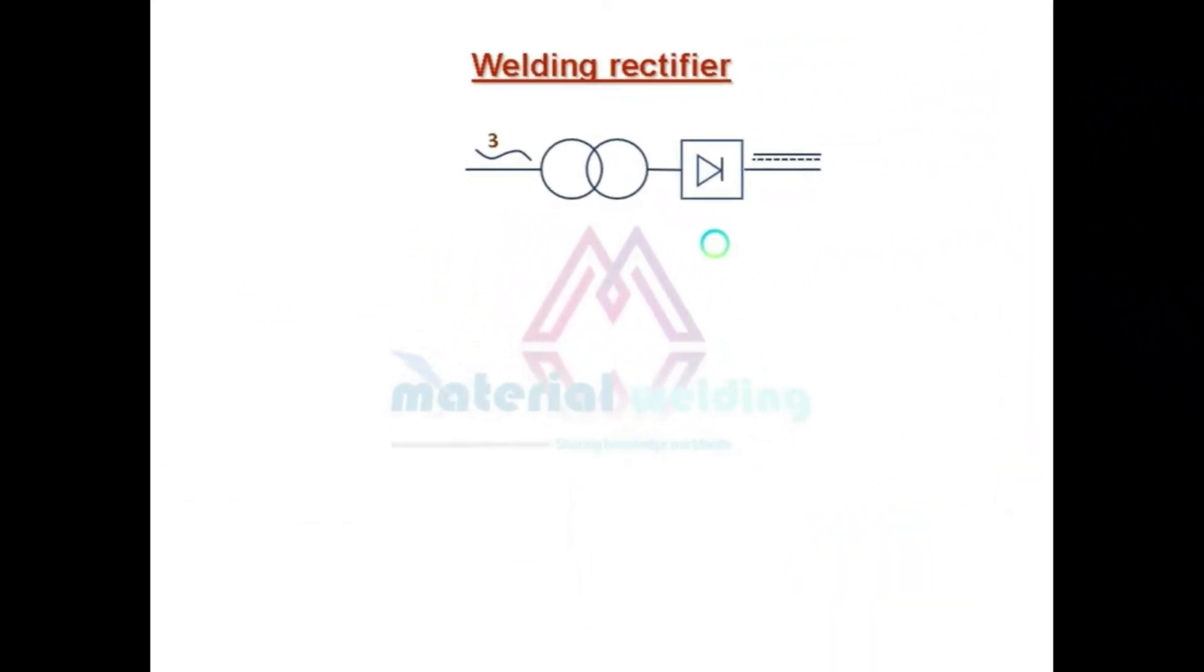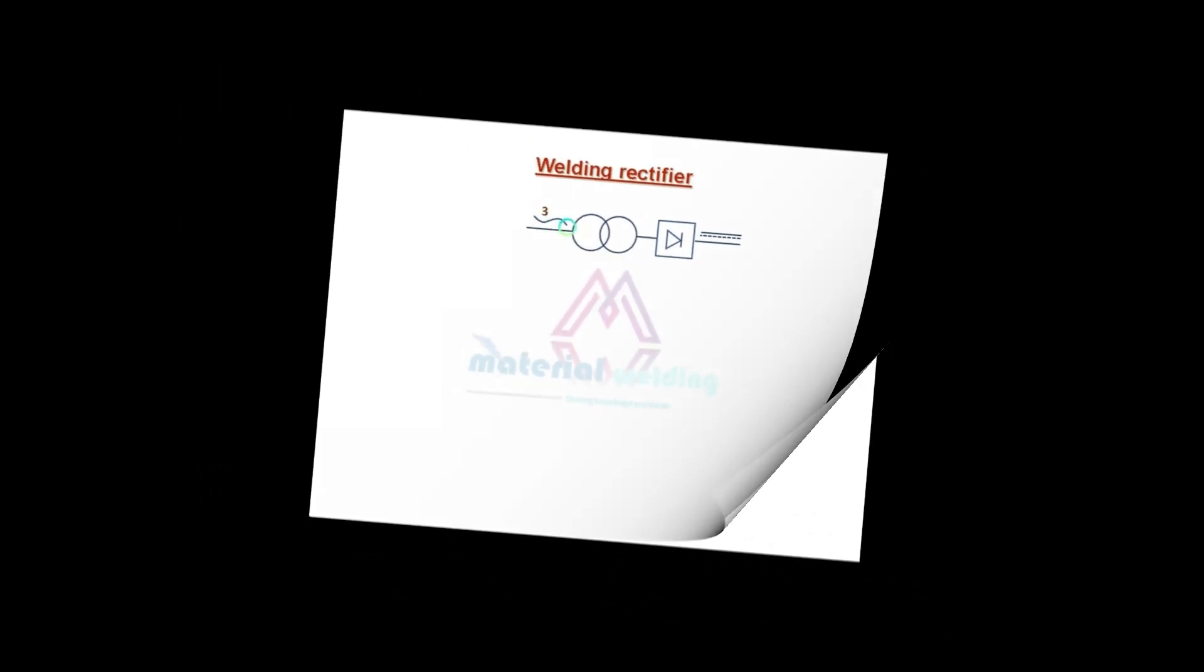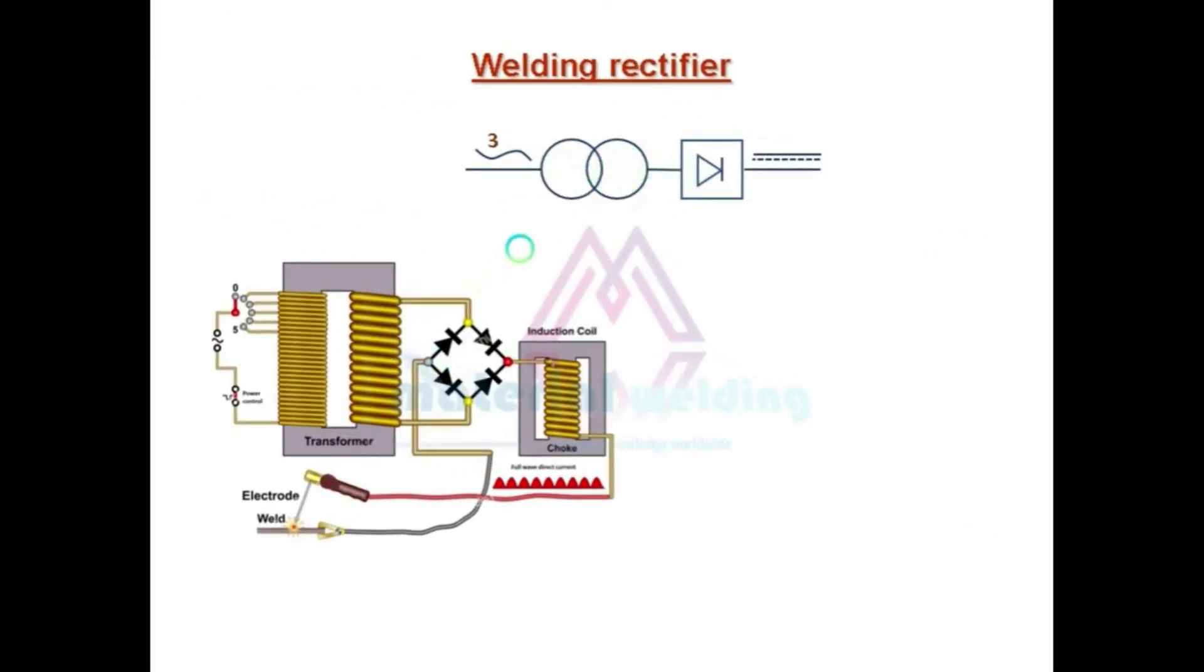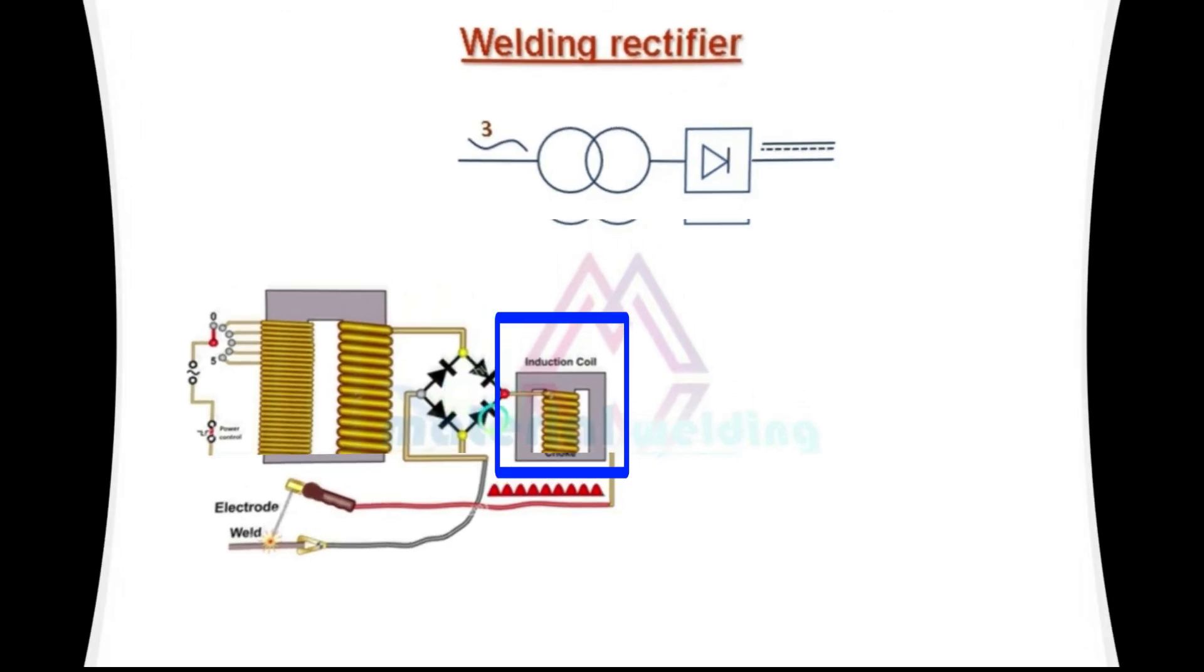Next type is welding rectifier. Here the symbol for the rectifier type welding power sources is shown for viewer learning. As we can see, an input supply of three phase alternating current is first reduced to low voltage and high current using a transformer and then rectified to direct current using a bridge rectifier. So bridge rectifier is basically an arrangement of diodes. A choking device is used to smooth the output direct current for smoother welding operations.